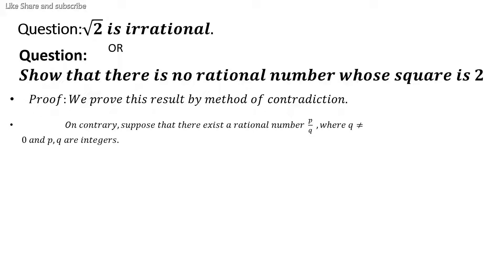...there exists a rational number. I am supposing that there exists a rational number, p over q. We take p over q because this is just the definition of a rational number, where p and q are numbers in the set of rational numbers, q is not equal to 0, and p and q are integers.